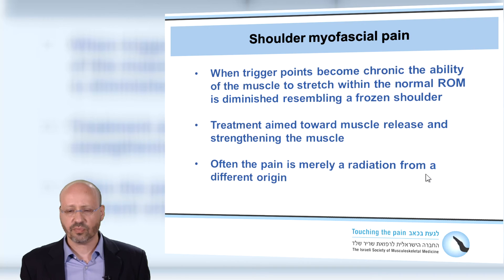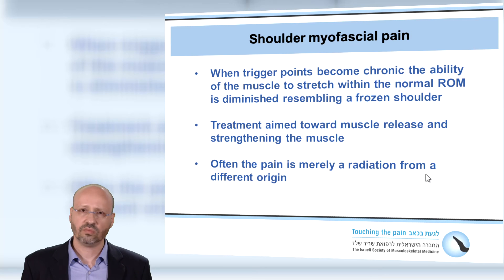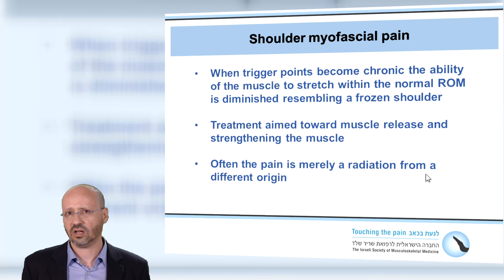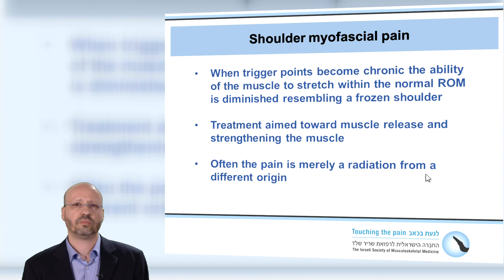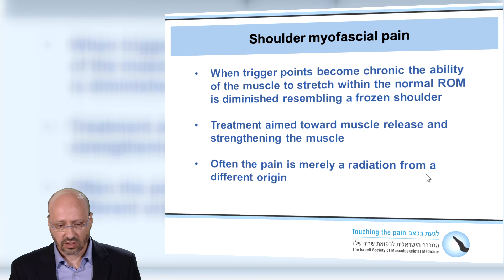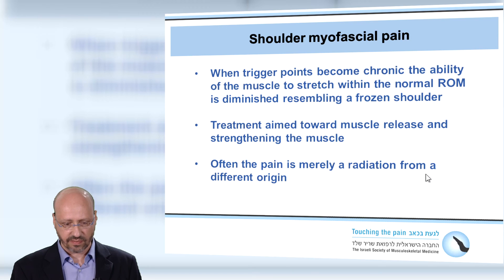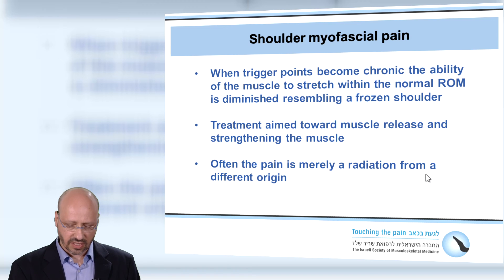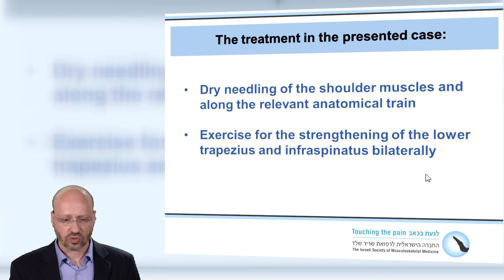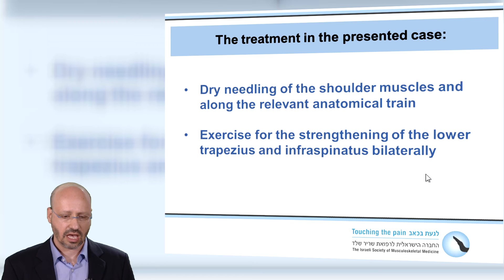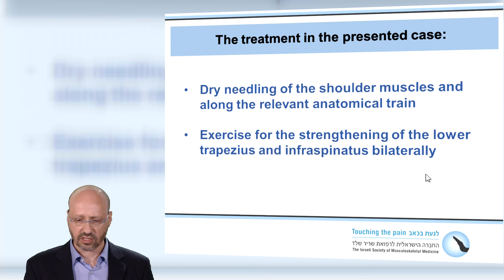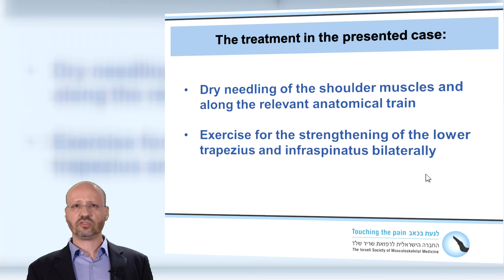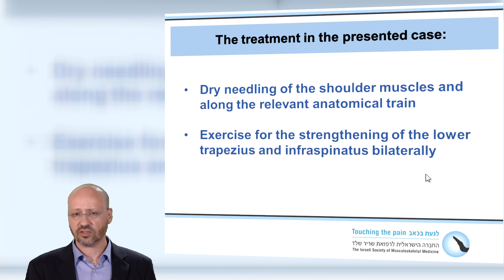A shoulder myofascial pain where trigger points become chronic — the ability of the muscle to stretch within normal range of motion is diminished. Sometimes it resembles frozen shoulder, even though you don't have findings on ultrasound or MRI. The treatment is aimed toward muscle release and strengthening, and often the pain is merely radiation from a different origin. The treatment in this case was dry needling to the shoulder muscles, along the relevant anatomical train, and he was given exercises for strengthening the lower trapezius and the infraspinatus bilaterally. He became much better.